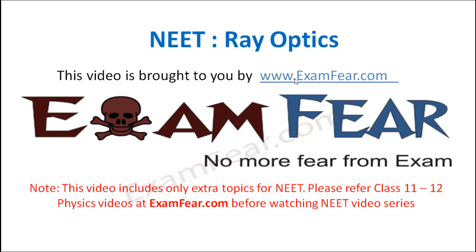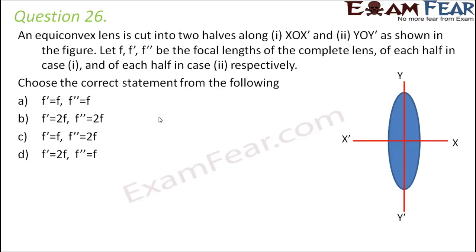Hello friends. This video on ray optics is brought to you by examfear.com — no more fear from examfear. Question number 26: An equi-convex lens is cut into two halves along XOX and YOY as shown in the figure. Let F, F', and F'' be the focal lengths of the complete lens, of each half in case 1, and of each half in case 2 respectively. Choose the correct statement from the following.